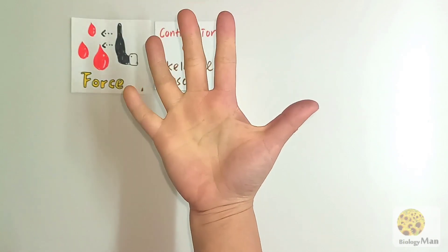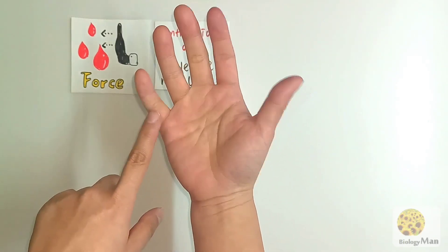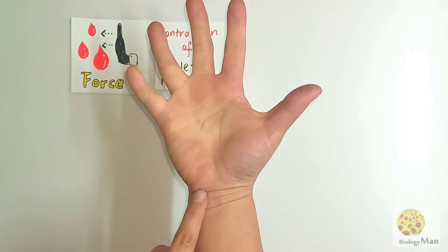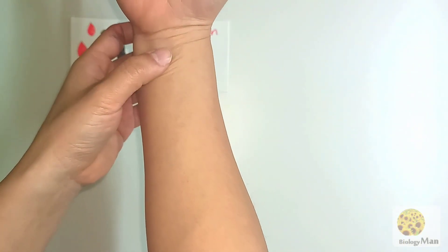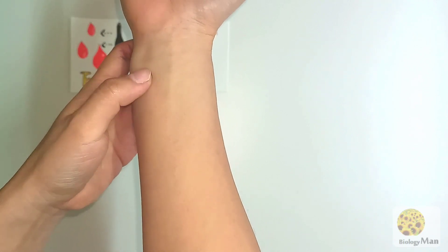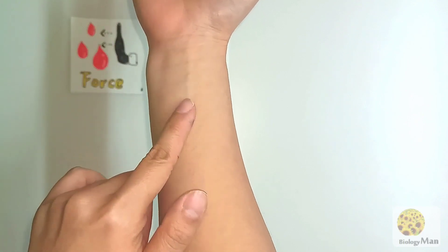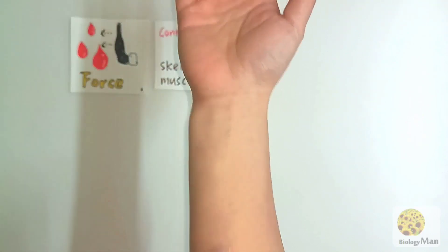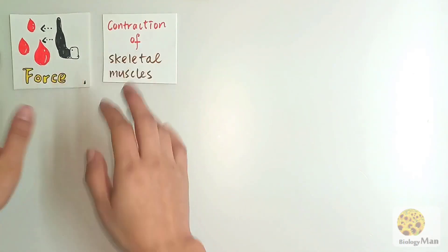When my hand moves, the contractions of the skeletal muscle will squeeze the vein near them. The squeezing generates a force to push the blood inside the vein back to the heart. Let's take a look at what is actually happening.